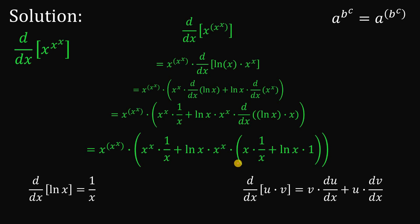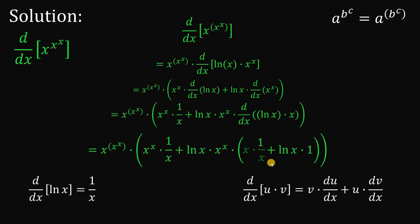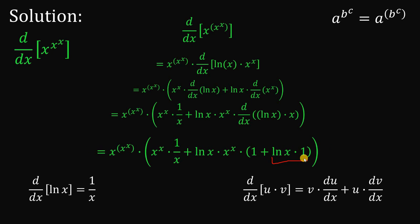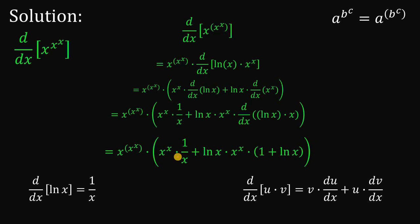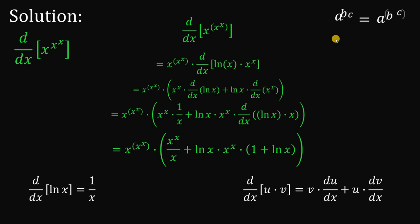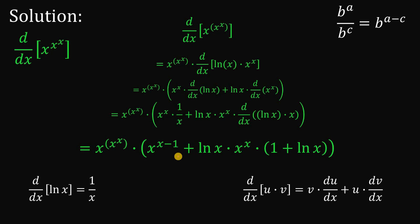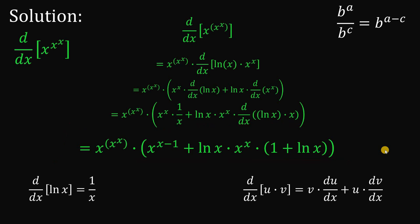Now let's simplify, starting with the numbers inside the parentheses. x times 1 over x — the x's cancel — so this is just 1. And ln of x times 1 is just ln of x. Now, x raised to x times 1 over x: since x has an exponent of 1, we can rewrite this as x raised to x all over x. Applying the law of exponents — b raised to a over b raised to c equals b raised to the power of a minus c — we get x raised to the power of x minus 1. And this is the derivative of x raised to x raised to x. This is our final answer.